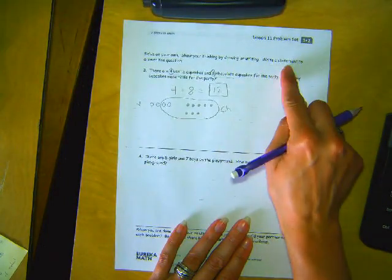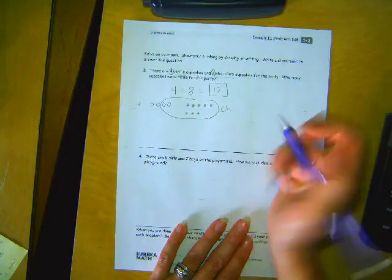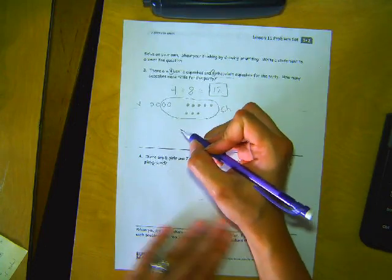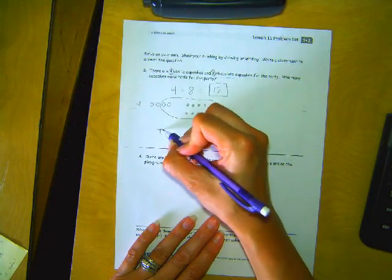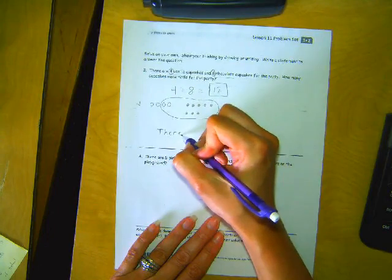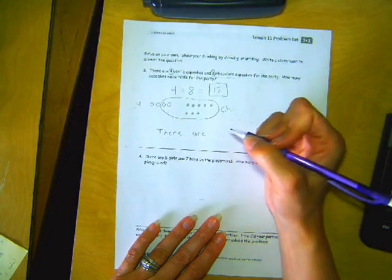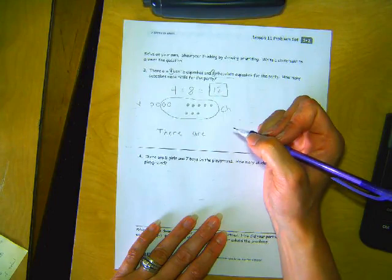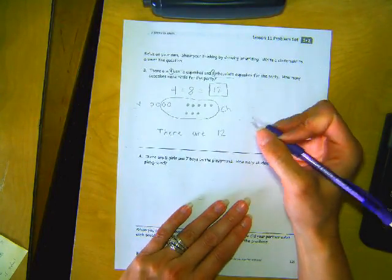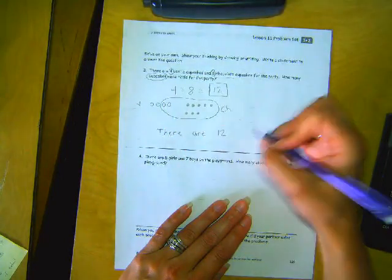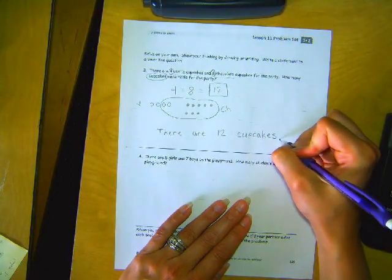Now remember it says to write a statement to answer the question. So I'm going to write, there are twelve cupcakes. Statement tells you how many and what, how many of what you have. So, there T-H-E-R-E, are A-R-E, that spells are, there are twelve cupcakes. Now cupcakes was written up here for you, so I just have to copy it. Period.